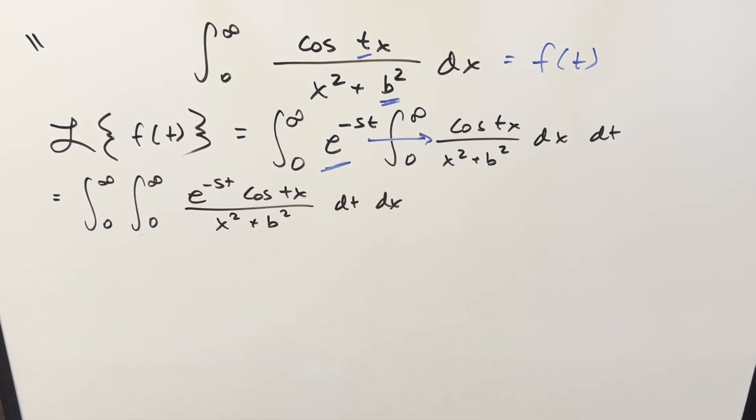And now at this point, you might see where we're going with it because what we have right here, this part, the numerator is just going to be an easy Laplace transform. x squared plus b squared, this is all going to be a constant with respect to t. So we can take this outside of this integral and bring it over here.